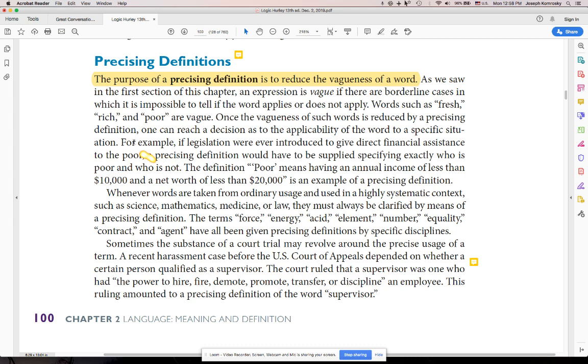For example, if legislation were ever introduced to give direct financial assistance to the poor, a precise definition would have to be supplied specifying exactly who is poor and who is not. The definition poor means having an income of less than $10,000 and a net worth of less than $20,000 is an example of precising.